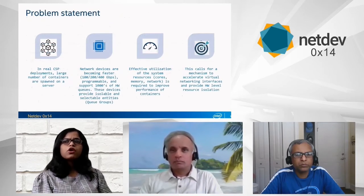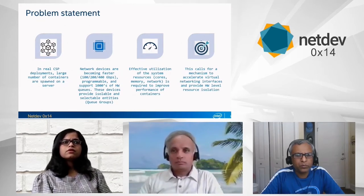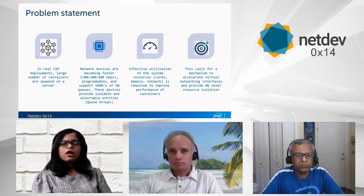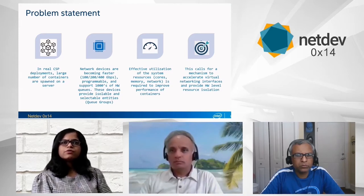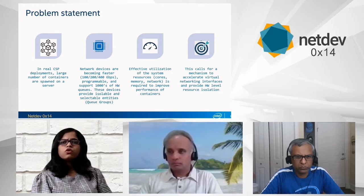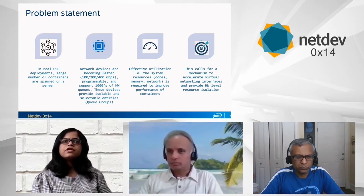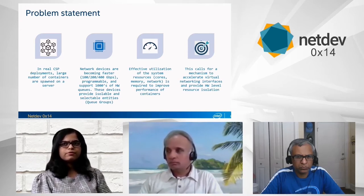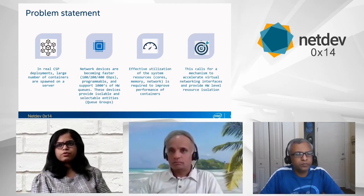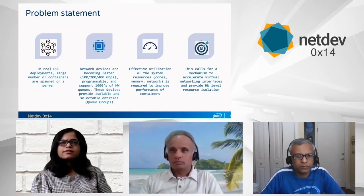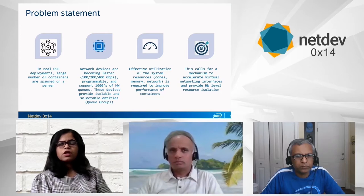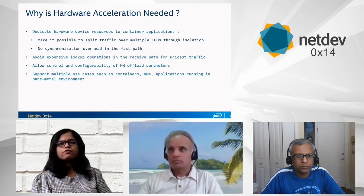Here is the problem statement. Cloud deployments typically have large numbers of containers spawned on a server. Today we have advanced networking devices which are high-speed, highly programmable, and support large numbers of queues — giving us entities called queue groups. Our goal is to improve the performance of containerized applications by effectively utilizing all system resources: cores, memory, and network. For this session, our focus is to effectively utilize networking resources, which calls for a mechanism to accelerate virtual networking interfaces into hardware, thereby providing hardware-level resource isolation to containers.